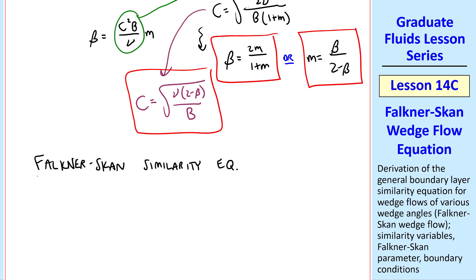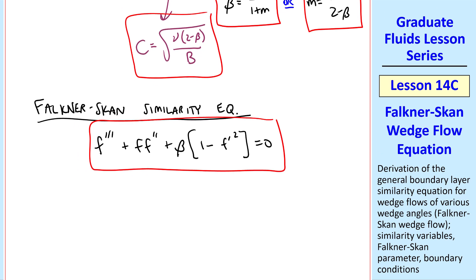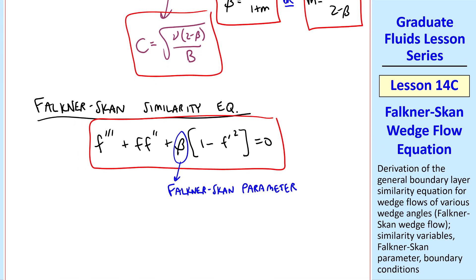So in summary, the Falkner-Skan similarity equation, which we rewrite here, boils down to one parameter, beta, which we call the Falkner-Skan parameter.